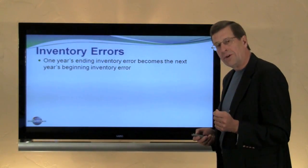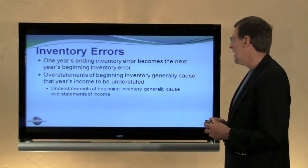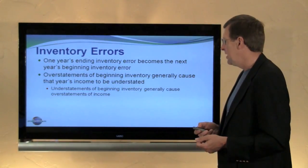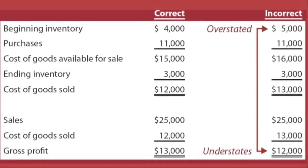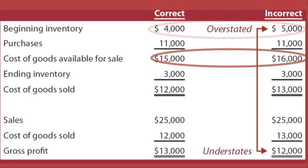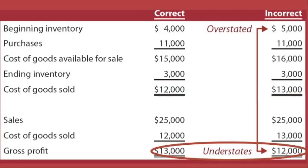One year's error in ending inventory becomes an error in next year's beginning inventory, and the effects tend to be reversing. Overstatements of beginning inventory generally cause that year's income to be understated, and vice versa. By way of example, our incorrect beginning inventory is $5,000 when in fact it was actually $4,000. When we calculate cost of goods available for sale, that gives $16,000 when in fact only $15,000 were actually available. Assuming inventory is correctly counted at the end of this second year at $3,000, that causes cost of goods sold to be $13,000 rather than the correct $12,000, causing the understatement in gross profit.